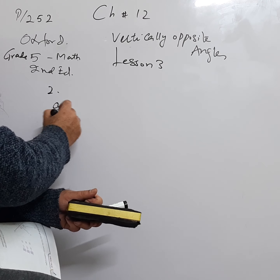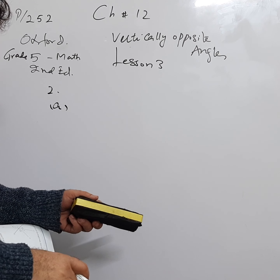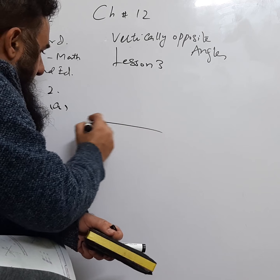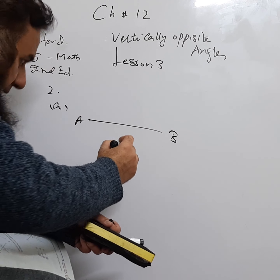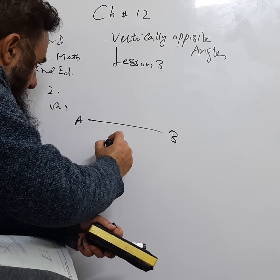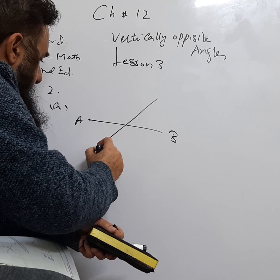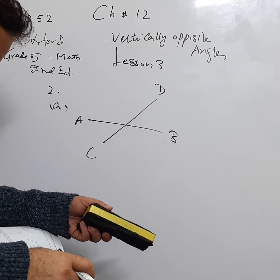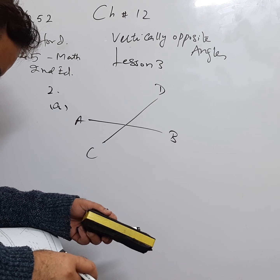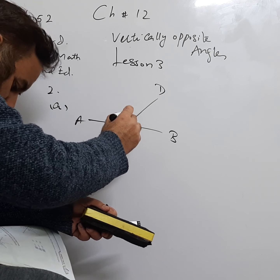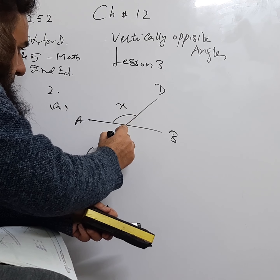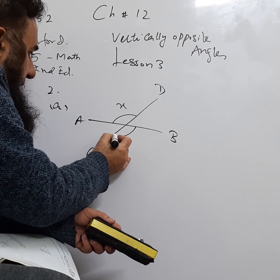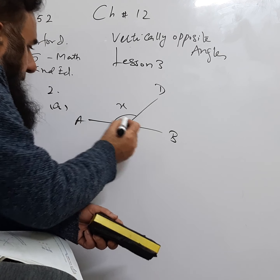AB and CD are straight lines — this is AB and this is CD. These are two straight lines and they are making X. We can say that this unknown angle X is equal to the opposite angle, because these two are vertically opposite.